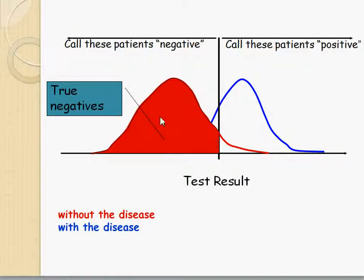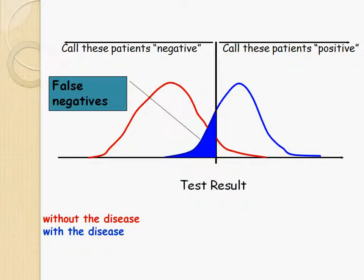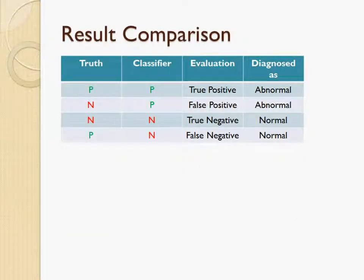The third region is the large red area: it is classified as negative and they are indeed negative — this is correct, and we name it true negative. The last term is the smaller blue region: it is classified as negative, but in reality it belongs to the positive curve — this is incorrect, and we name it false negative. All possible classification results can be summarized in a table. Patients are diagnosed as normal or abnormal based on the negative and positive results from the classifier, though some results may not be correct.